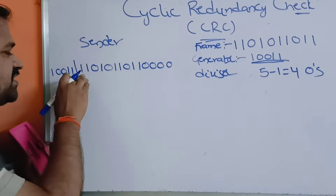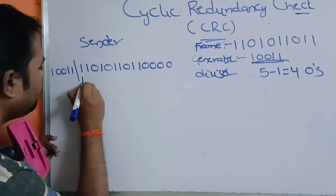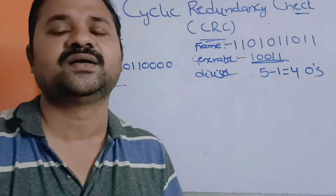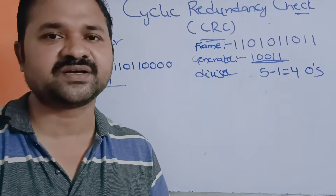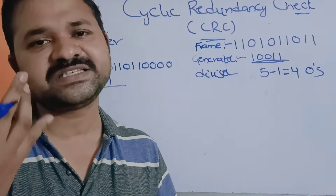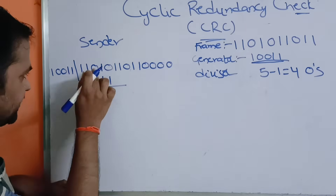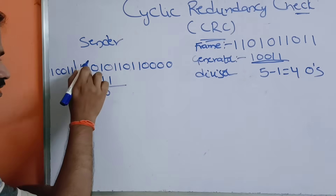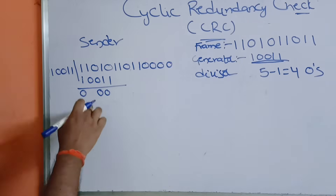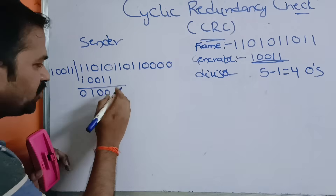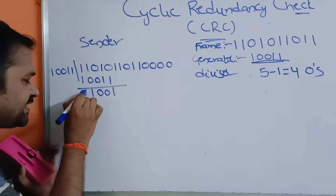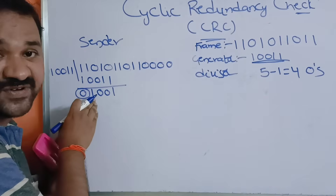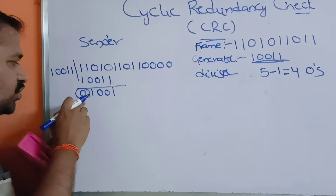Here the most significant bit is 1, so we multiply by 1: the divisor is 1 1 0 0 1. Next we perform the subtraction, which is nothing but the XOR operation. If both bits are the same, the result is 0; if both bits are different, the result is 1. Performing XOR: we get 0 0 0 1 1. We should not consider leading zeros — the most significant bit must always start from 1. So we omit the leading 0 here.